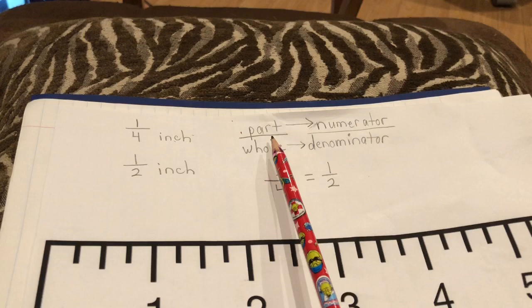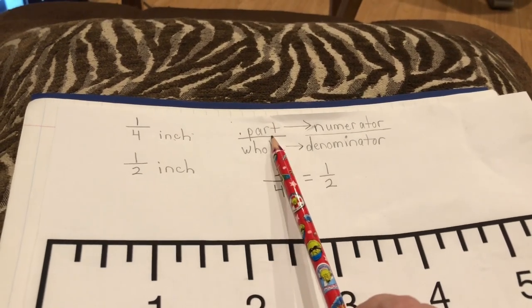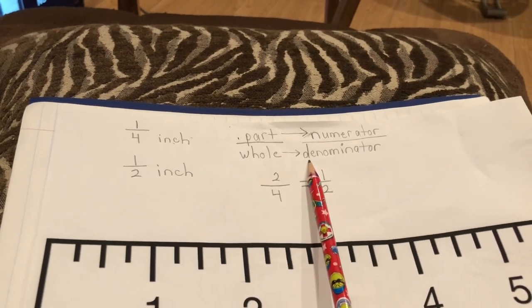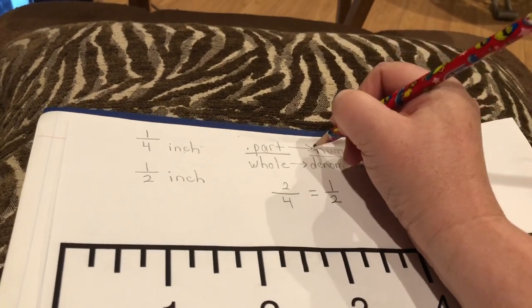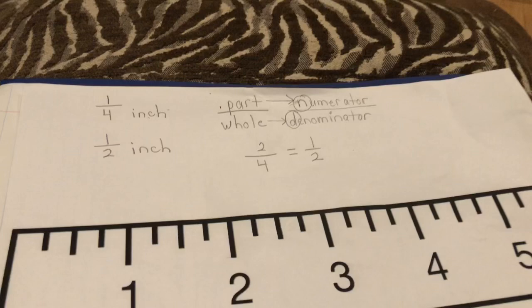Remember that a fraction is part over whole. The part is the numerator, and the whole is the denominator. And our little trick to remember that is the nurse comes in before the doctor, so it's part over whole.